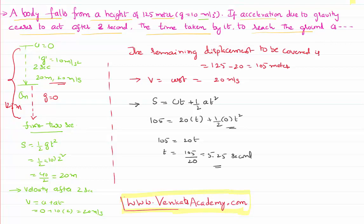So the total time taken by the body to reach the ground is, initially it has taken 2 seconds, it is taking another 5.25 seconds, 2 plus 5.25, that's nothing but equal to 7.25 seconds.